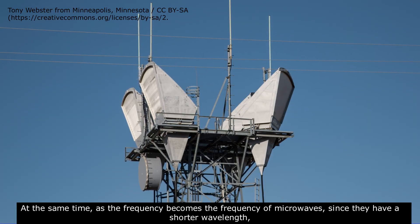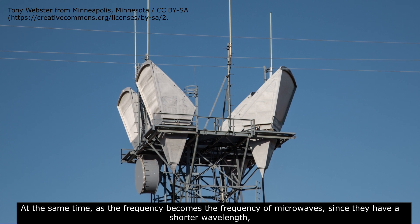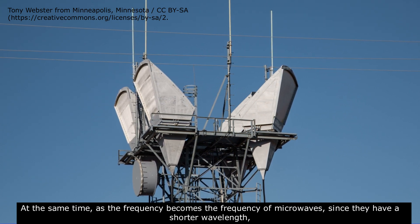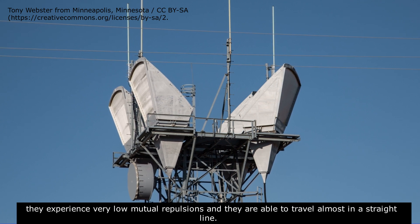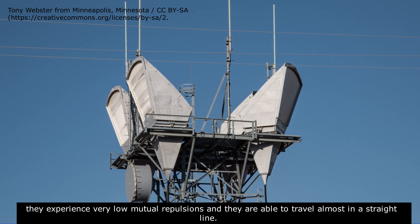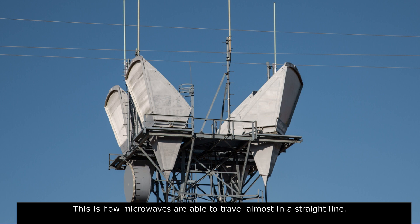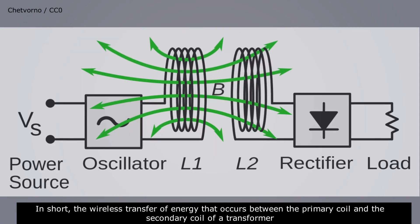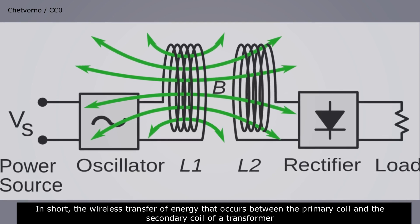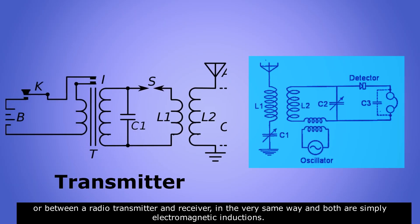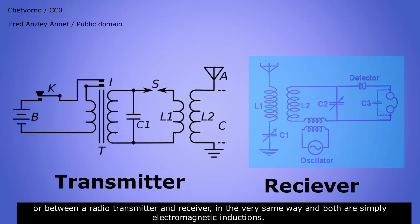At the same time, as the frequency becomes that of microwaves, since they have a shorter wavelength, they experience very low mutual repulsion and are able to travel almost in a straight line. In short, the wireless transfer of energy between the primary and secondary coil of a transformer and between a radio transmitter and receiver works in the very same way — both are simply electromagnetic induction.